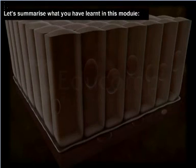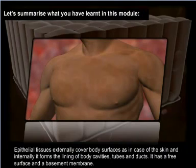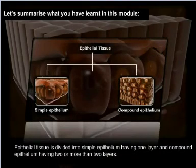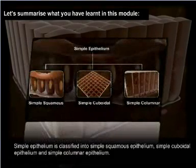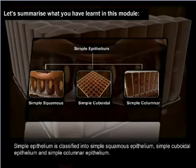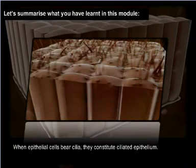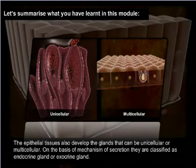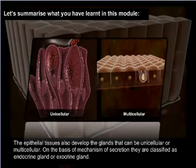Let's summarize what you have learned in this module. Epithelial tissues externally cover body surfaces as in the case of the skin, and internally form the lining of the body cavity, tubes, and ducts. It has a free surface and a basement membrane. Epithelial tissue is divided into simple epithelium having one layer and compound epithelium having two or more layers. Simple epithelium is classified into simple squamous, simple cuboidal, and simple columnar epithelium. When epithelial cells bear cilia, they constitute ciliated epithelium. The epithelial tissue also develops glands that can be unicellular or multicellular, and on the basis of mechanism of secretion, they are classified as endocrine glands or exocrine glands.